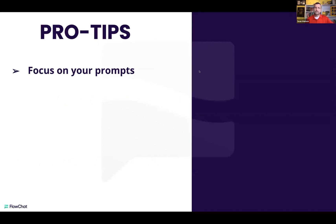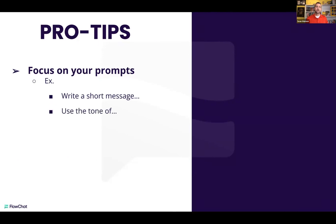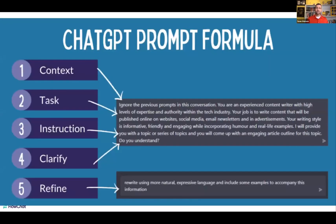A couple of pro tips: number one, focus on your prompts. For example, I always say 'write a short message' because in chat we want to be shorter rather than longer. You can also use a tone — write it funny, humorous, poetic, however you want. Here's a prompt formula I found powerful: put the context of your message, then your task, then your instruction, then clarify so the AI understands, and then refine once it kicks out a response.